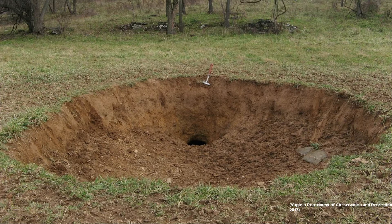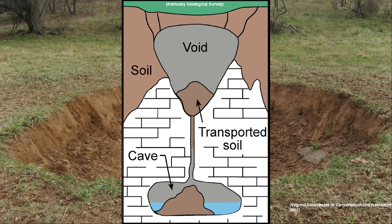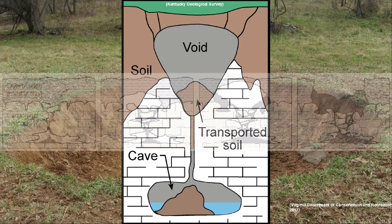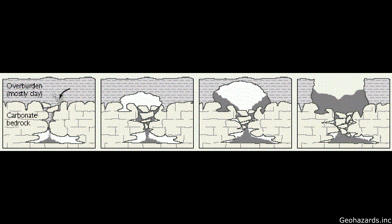Sinkholes are a prominent hazard in karst topography. The process in which sinkholes form begins with the dissolution of carbonate rocks below the surface, the collapse of an already existent cave system, or the draining of an aquifer.